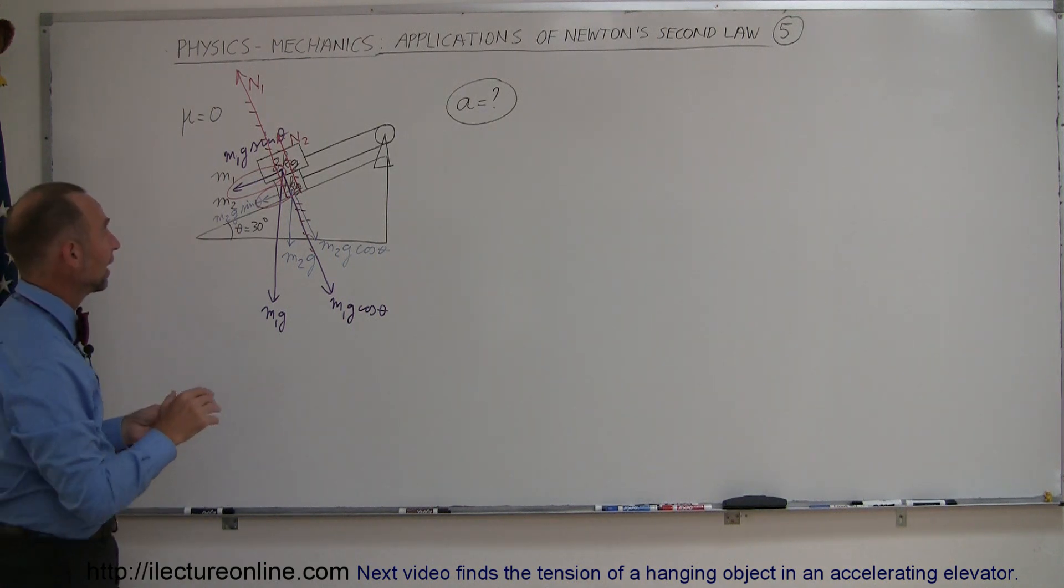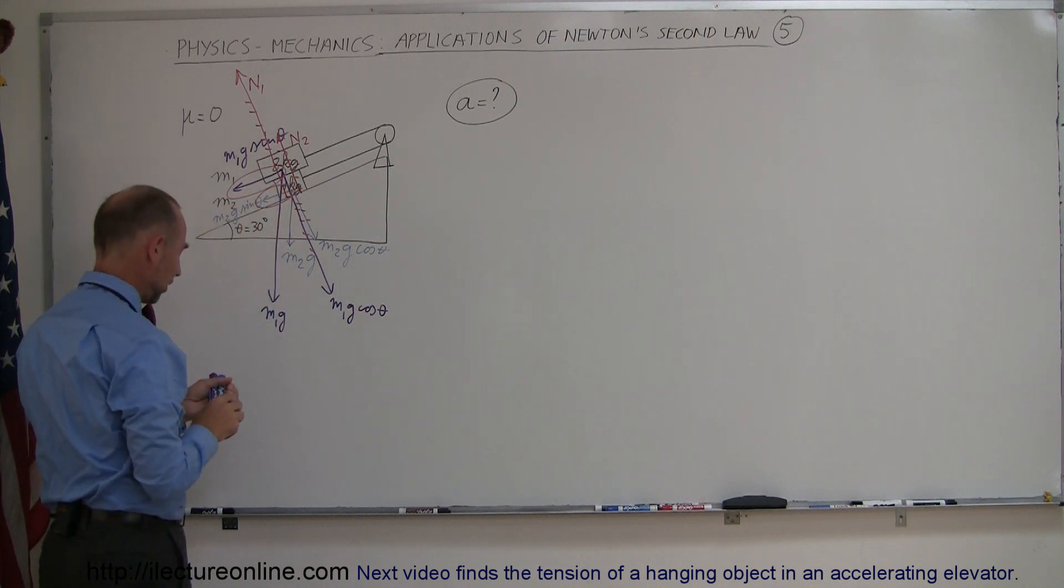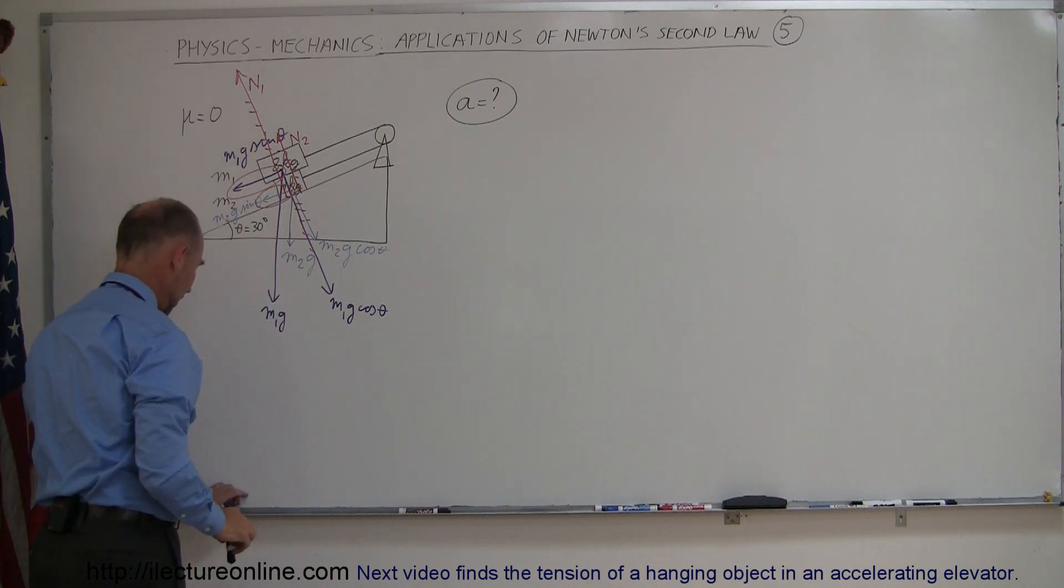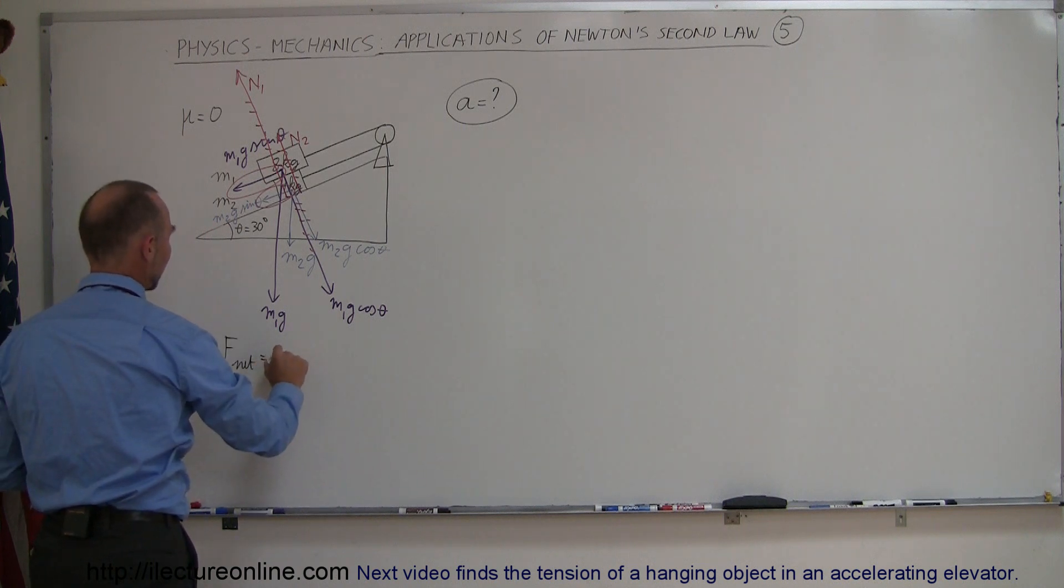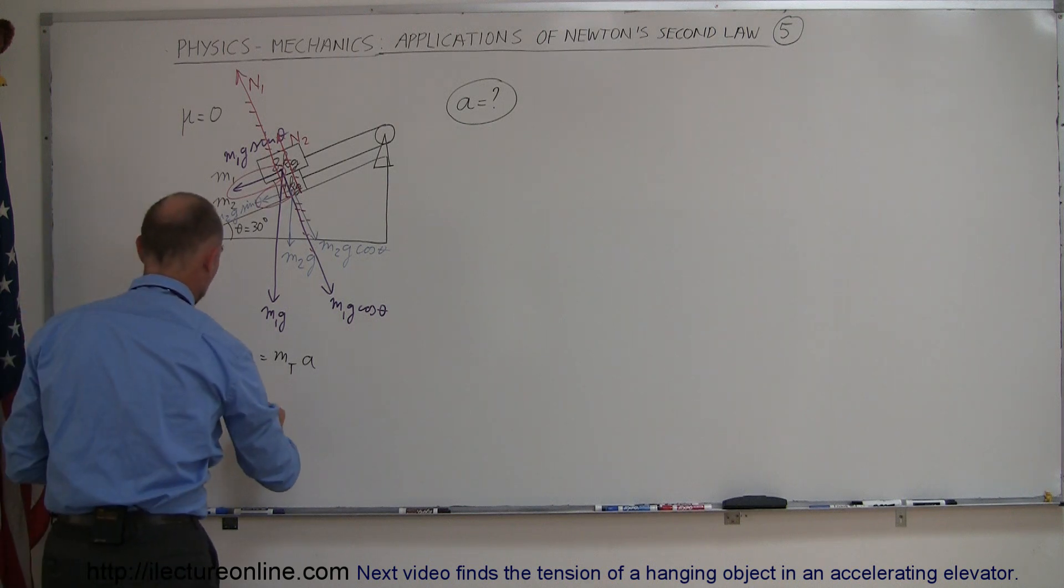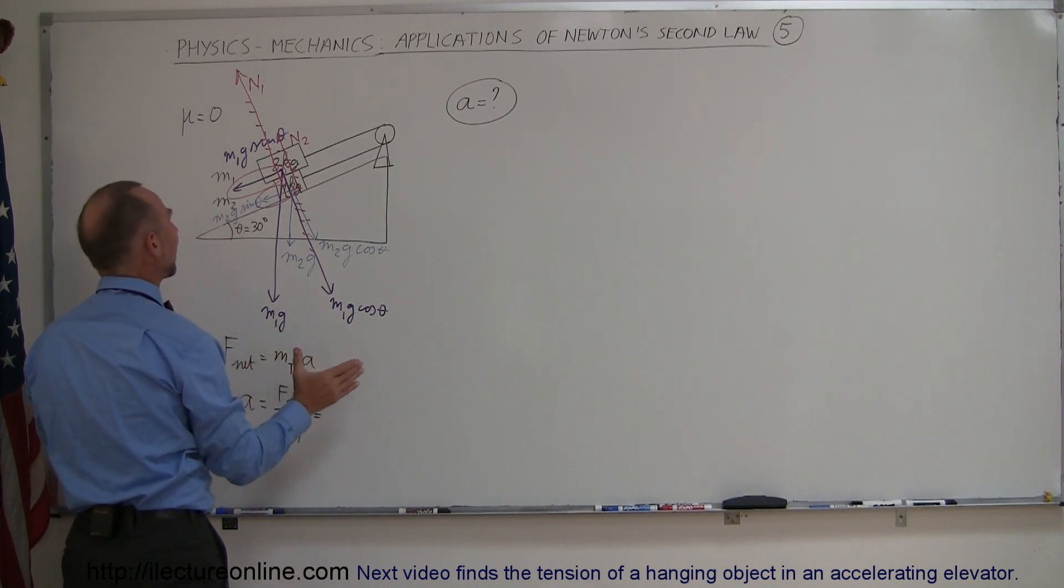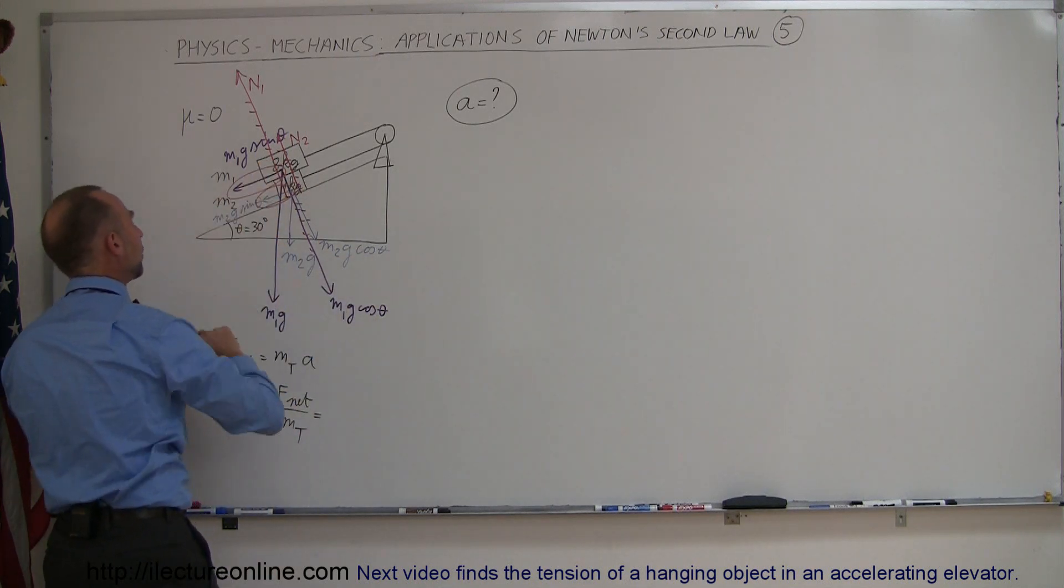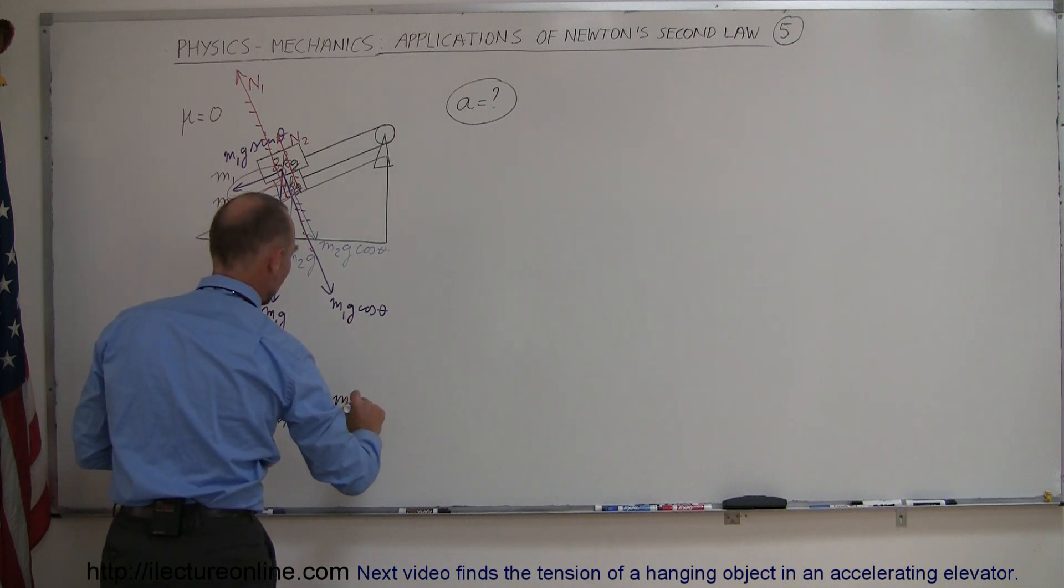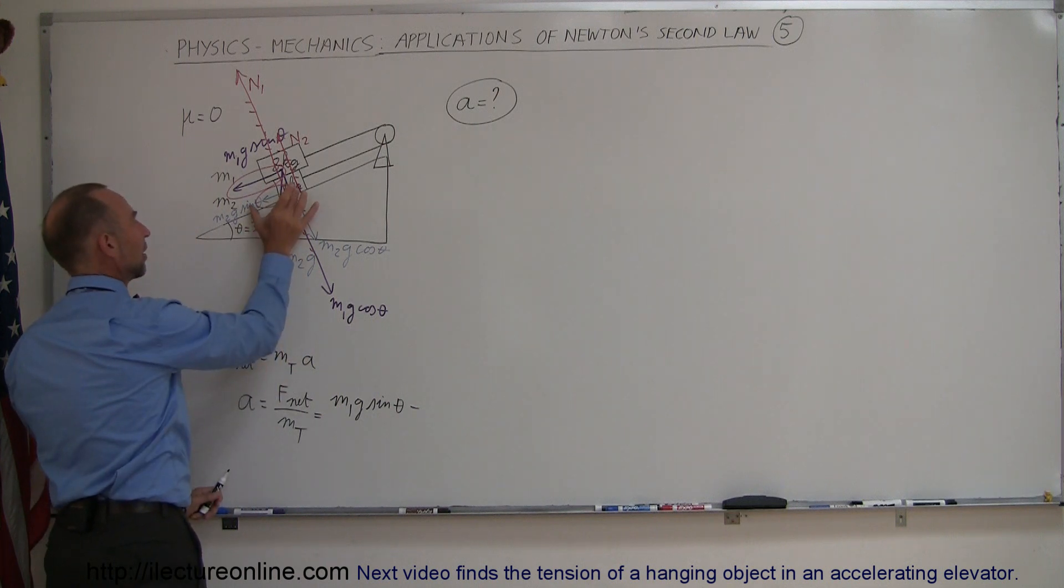Now I would say that this will be aiding in the acceleration and this one will therefore be opposing the acceleration, so I'm going to use Newton's second law. We can write that f net is equal to mass total times acceleration or solving that equation for the acceleration we will get acceleration is equal to f net divided by the mass total. And again f net will be made up by all the forces aiding the acceleration which would be this component right here which is m1g sine of theta.